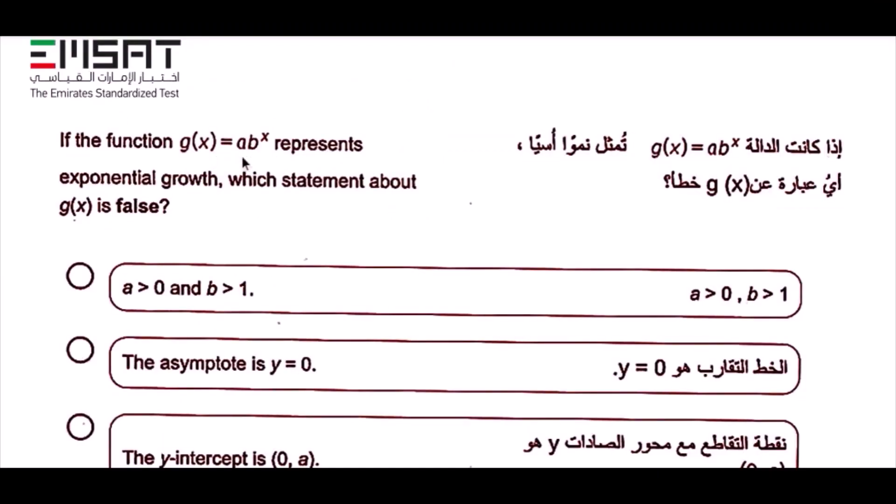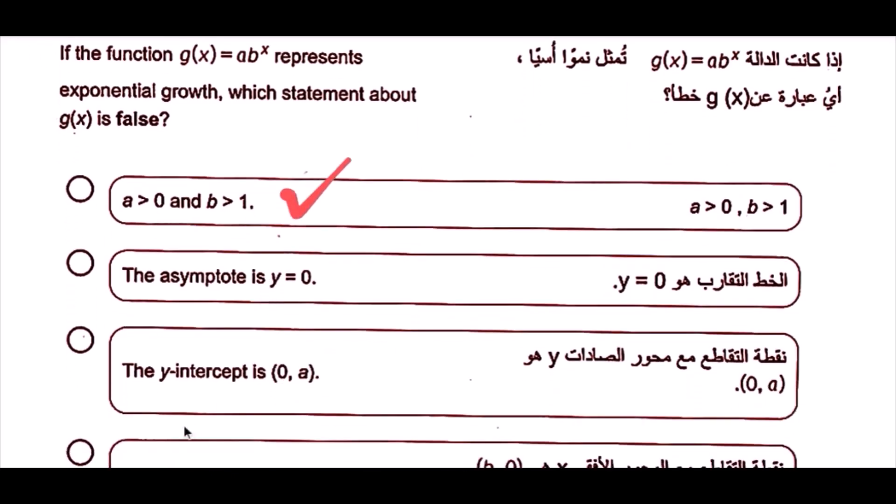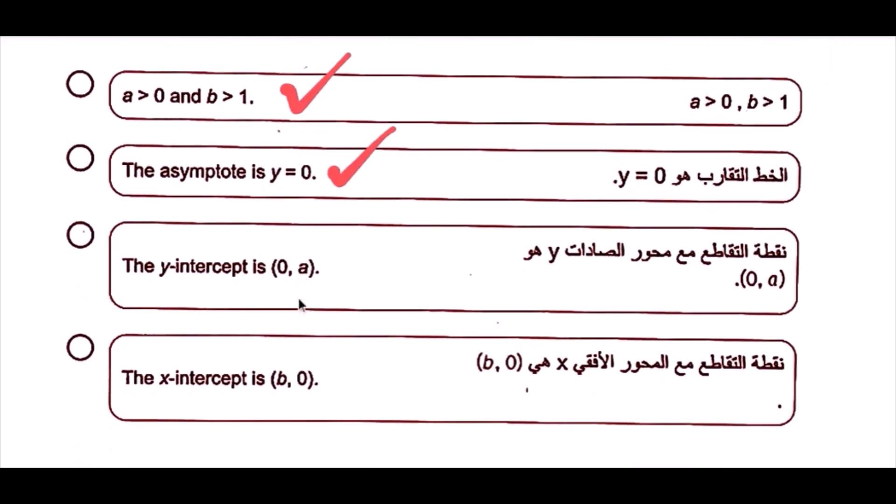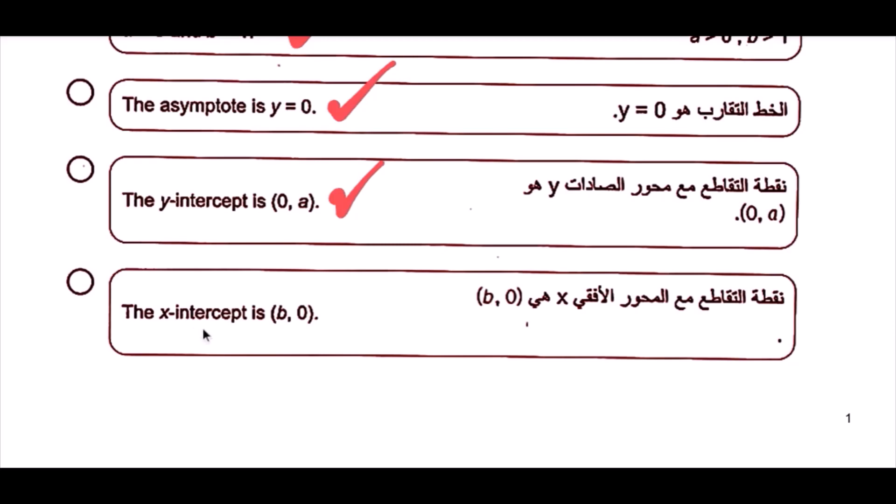In the function g of x equals a times b to the x, which represents exponential growth, which statement about g of x is false? If g of x represents exponential growth, so a greater than 0 and b greater than 1 is correct. Here the asymptote is y equals to 0 which is correct. The y-intercept is 0 and a which is correct. Here the x-intercept is b and 0, but there is no x-intercept. So choice 4 is false. So the answer will be choice 4.